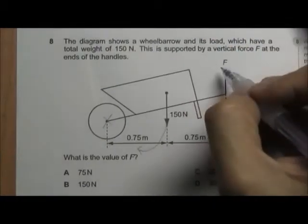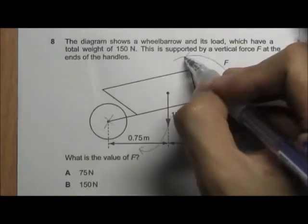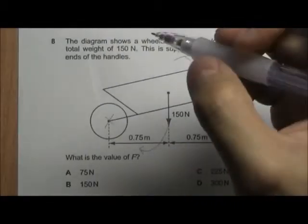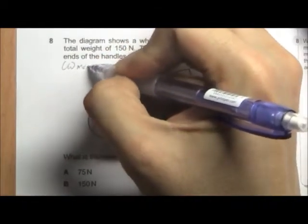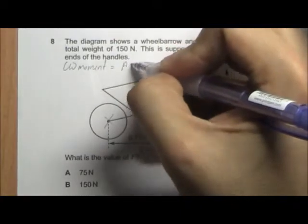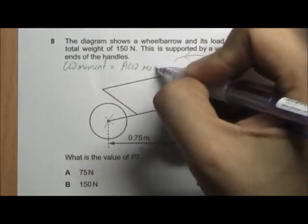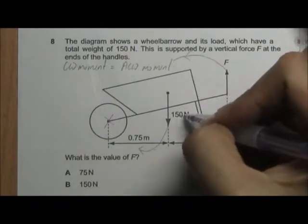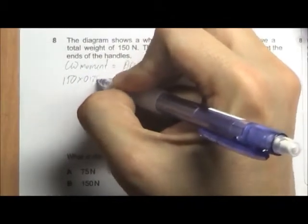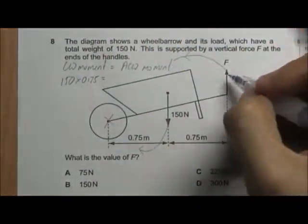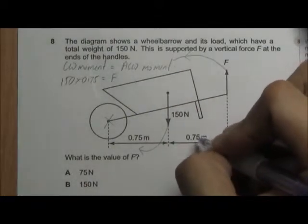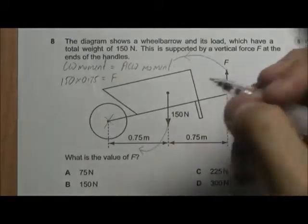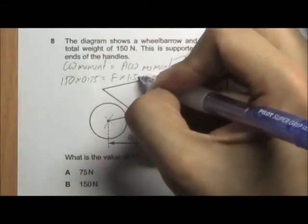anti-clockwise moment. We can use the principle of moments. Clockwise moment is equal to anti-clockwise moment. It will be 150 multiplied by 0.75 equals F multiplied by the perpendicular distance which is 0.75 meter plus 0.75 meter. That will give us 1.5 meter.